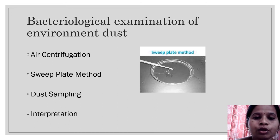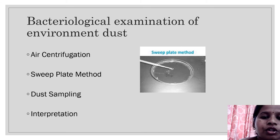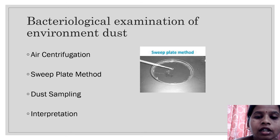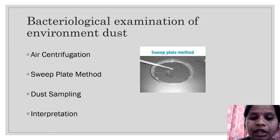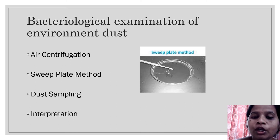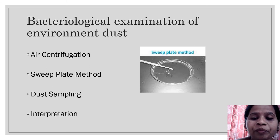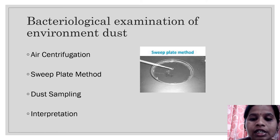For bacterial examination of the environment, four methods are used: air centrifugation, sweep plate, dust sampling, and interpretation. Air centrifugation involves the principle of centrifugation where air is allowed to centrifuge particles onto a culture media. The sampling strip is removed from the instrument and incubated at 37 degrees Celsius for 48 hours and colonies are counted. However, this method is less efficient for particles less than 5 microns in size and is inferior to the slit sampler method.